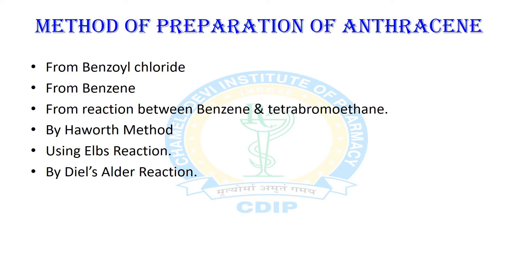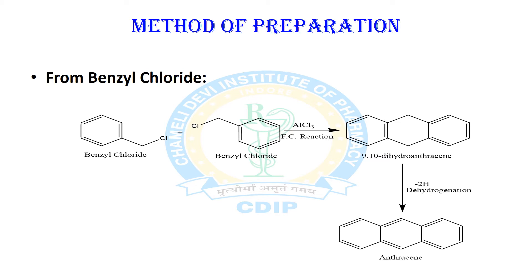Talking about the methods of preparation of anthracene, there are usually 4 to 6 methods. We can obtain it from benzyl fluoride, from benzene, from the reaction between benzene and tetrabromomethane, by the Haworth method, using the Elbs reaction, and using the Diels-Alder reaction. The first method is from benzyl fluoride — it is a kind of Friedel-Crafts reaction where two benzyl fluoride molecules react with each other in the presence of a Lewis acid. This results in the formation of 9,10-dihydroanthracene, which subsequently undergoes dehydrogenation to produce anthracene. The reaction mechanism follows the Friedel-Crafts electrophilic substitution reaction mechanism.